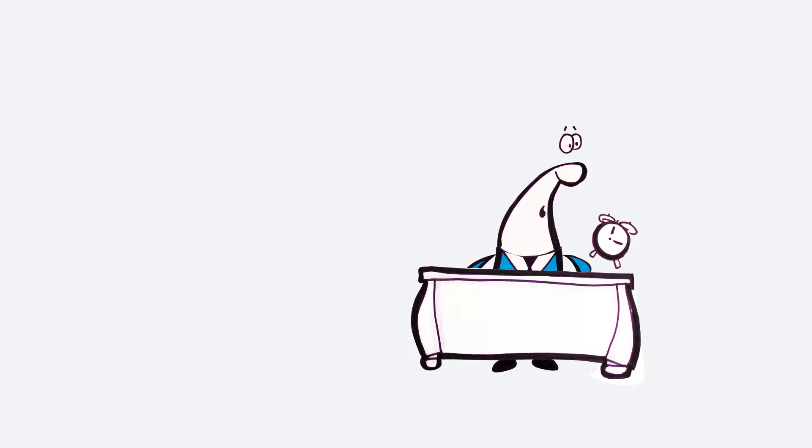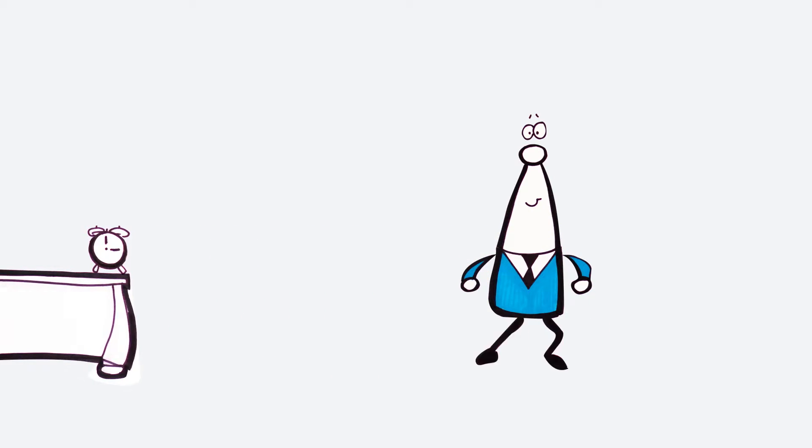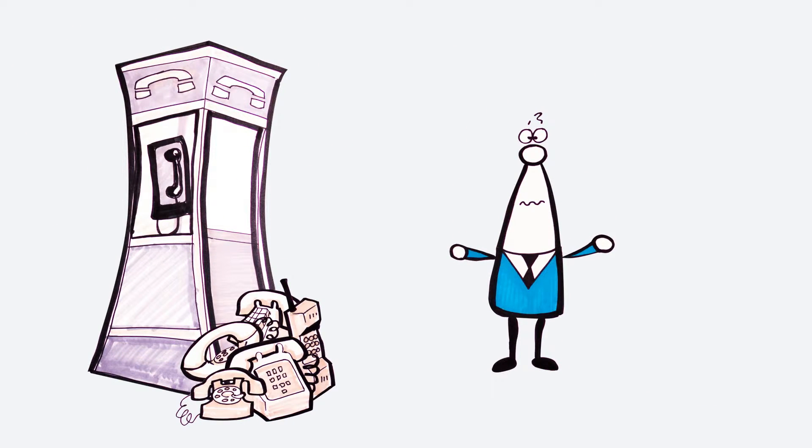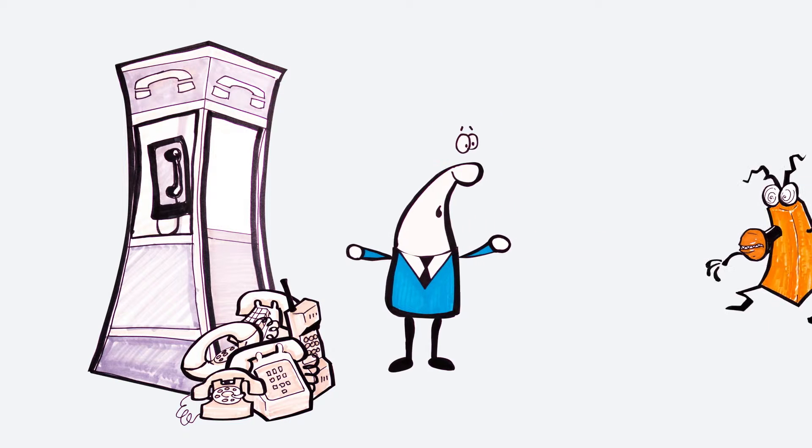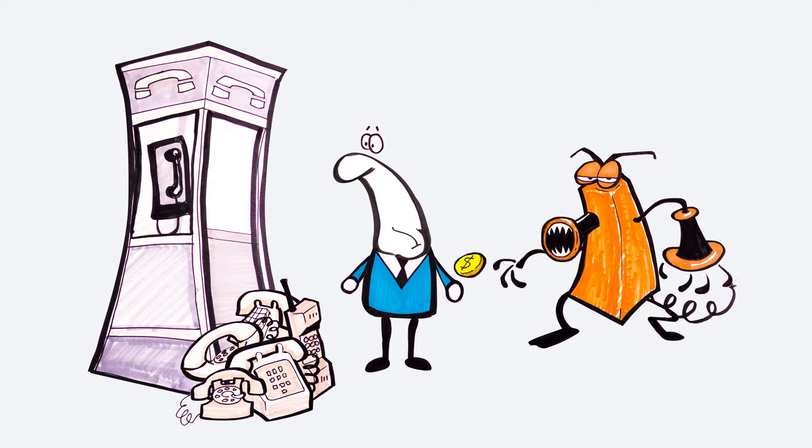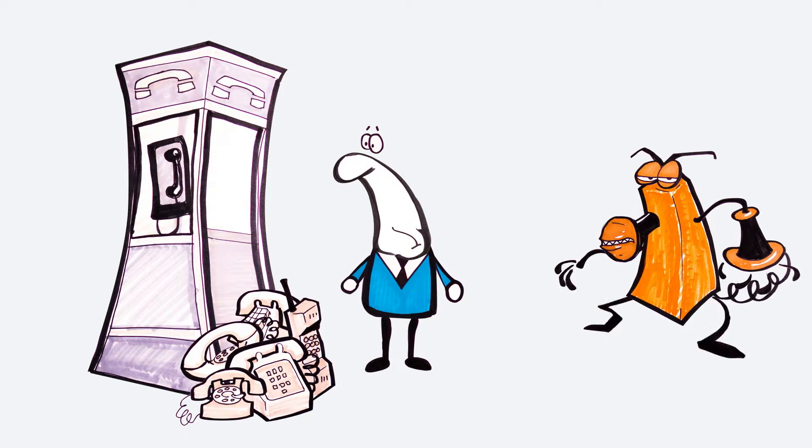But Bill is tight on time, so he skips the research and picks the first system he finds from a reseller. When his local telephone company asks him how many lines he would like to purchase, Bill tries to predict the future. Underestimating means his customers will be put off by busy signals.